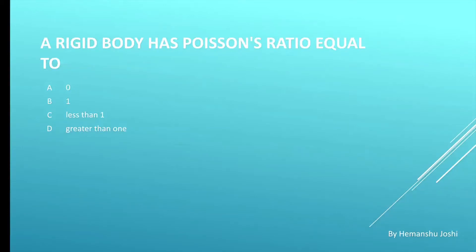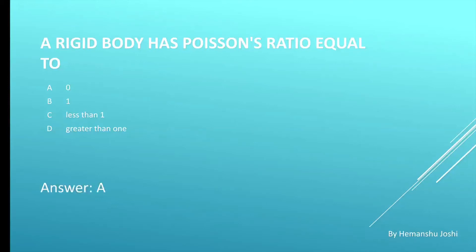Next question. A rigid body has Poisson's ratio equal to: options are A. 0, B. 1, C. 1, D. 1. As we know that a rigid body will not be having any type of deformation. So our answer is A. 0.